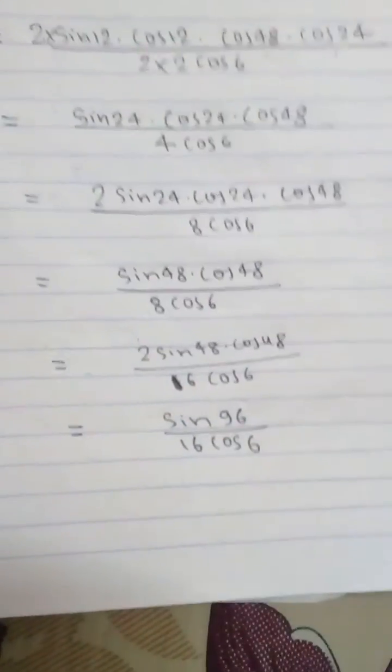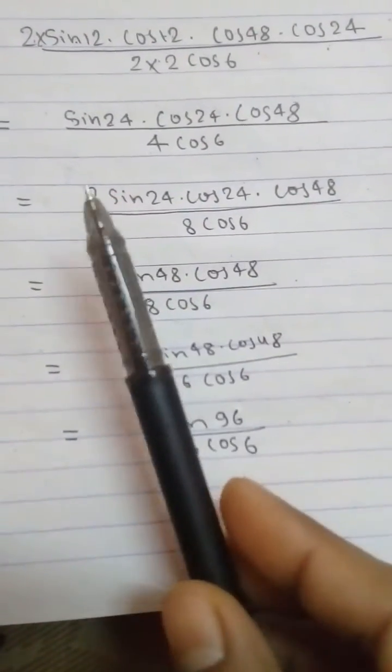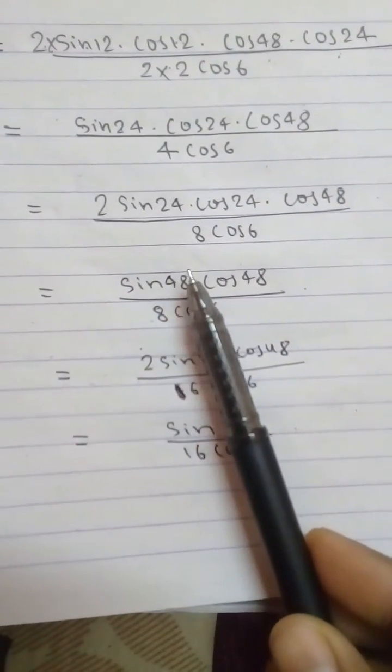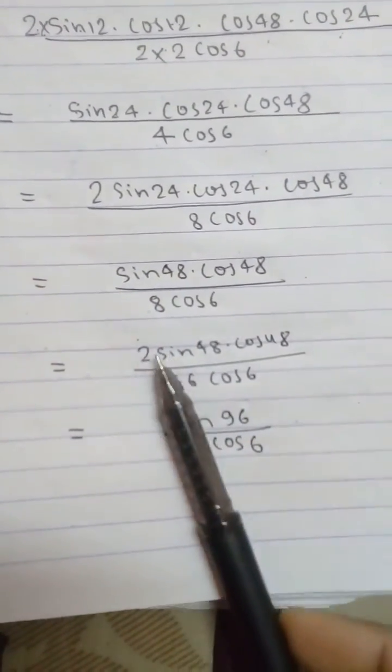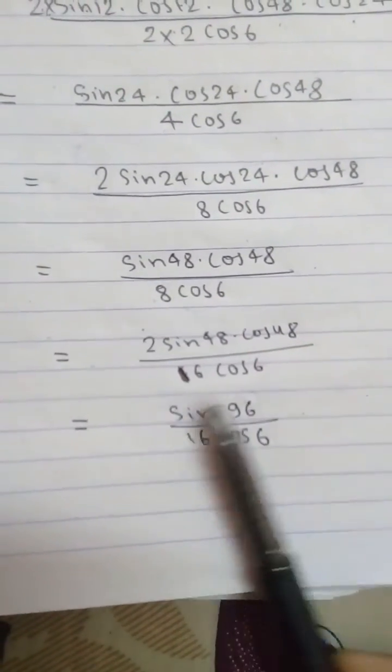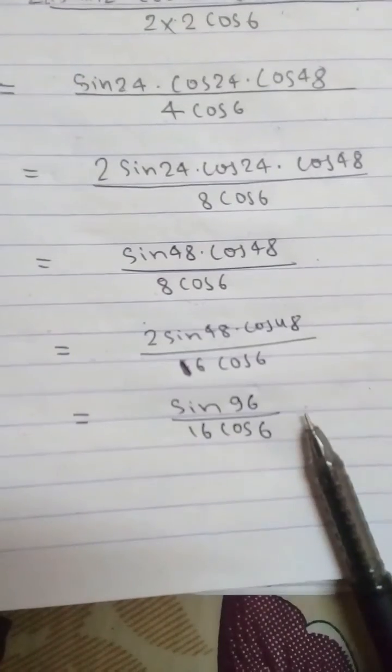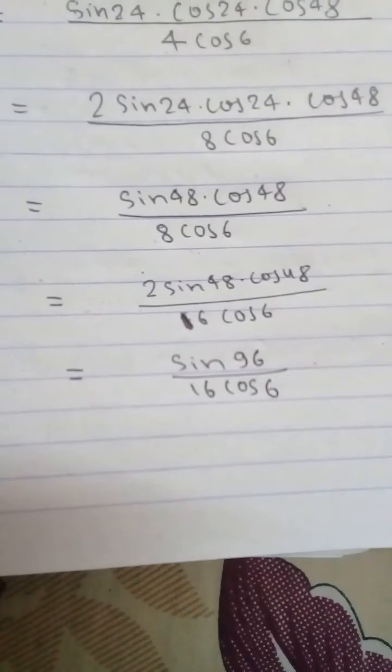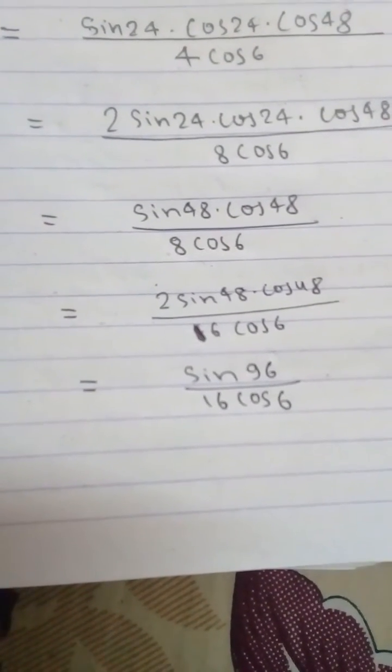I have just multiplied by 2 here and converted this. Here also I have multiplied by 2 and make it 16. By applying the formula, we get sin96 by 16cos6. Again we have to use the complementary rule or CAST rule.